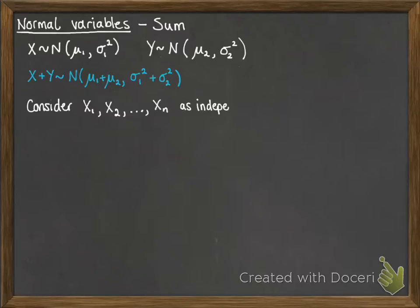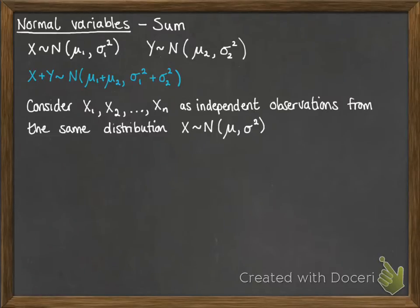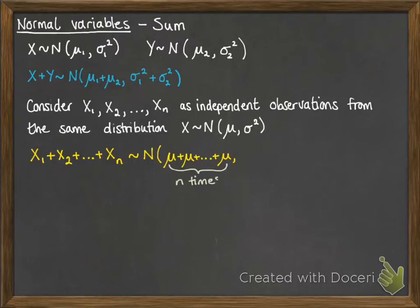Now if we consider that we took X₁, X₂ and so on up to Xₙ as independent observations from the same distribution of X, then we can follow through the logic that if you were wanting to do the sum of those, they would also follow a normal distribution where you added up the means, just like we've just seen with the X and the Y's, except this time the mean is the same thing every time. So we're going to do the mean n times. And the same with the variances, they'll get added up n times. So what you end up with is this result.